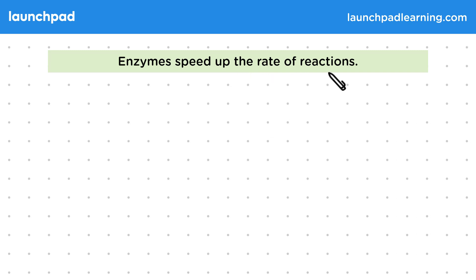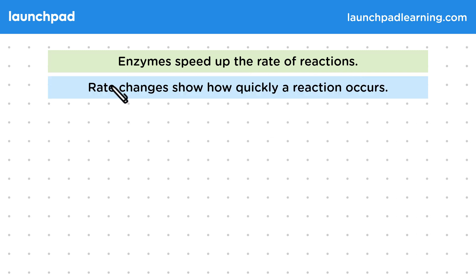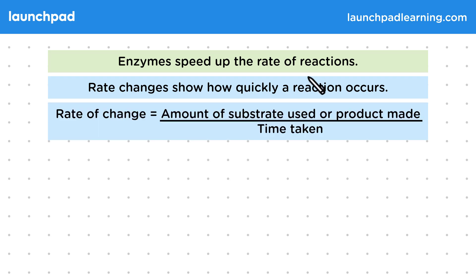Enzymes speed up the rate of reactions. Rate changes show how quickly a reaction occurs. You should be able to carry out rate calculations for chemical reactions in your exam. Rate of change equals the amount of substrate used or product made divided by the time taken to make it.